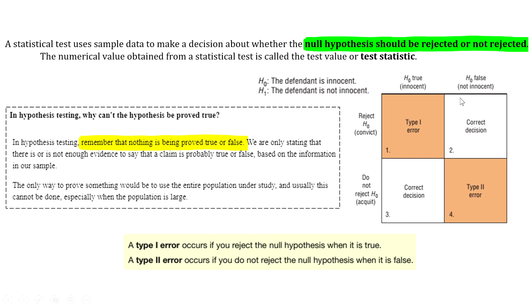The second outcome is that the defendant is not innocent—in other words, they're guilty—and the jury decides to convict them. That would be a correct decision. The third outcome is that the defendant is innocent, and the jury decides to acquit them. They're innocent, they get acquitted—that would be a correct decision.